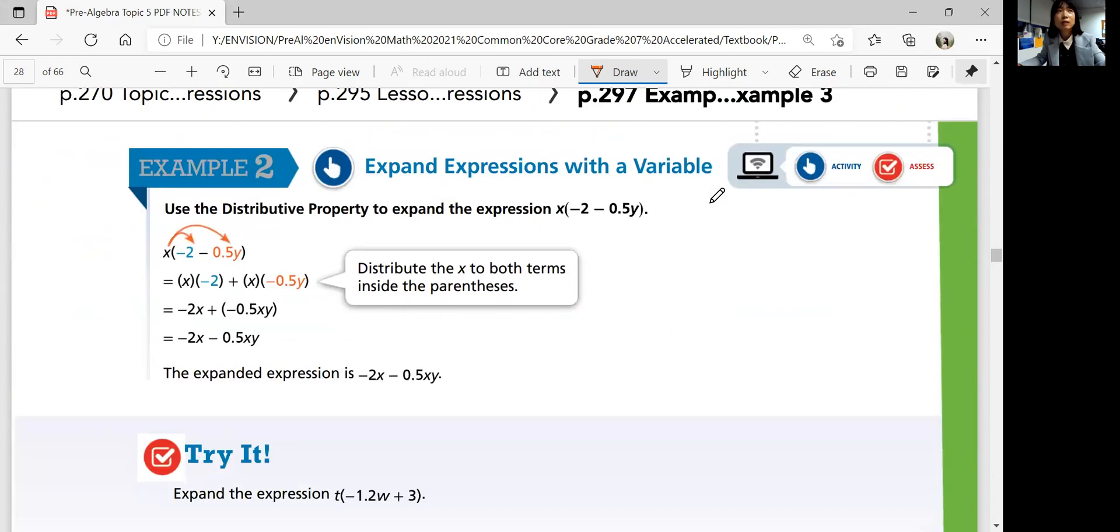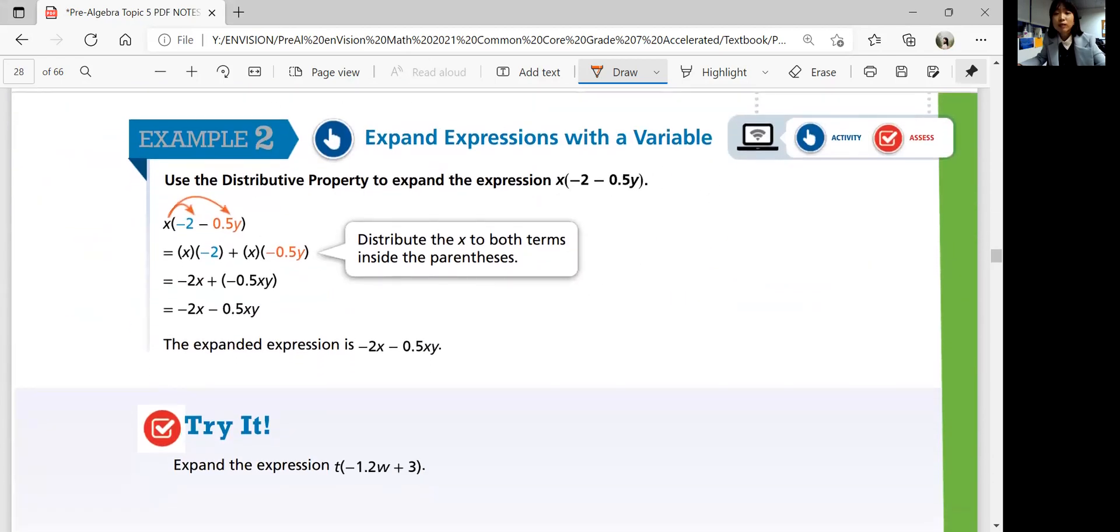Example 2 on the next page. Expand expressions with a variable. Use the distributive property to expand the expression x times negative 2 minus 0.5y.